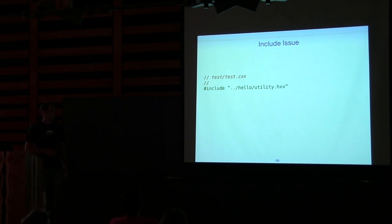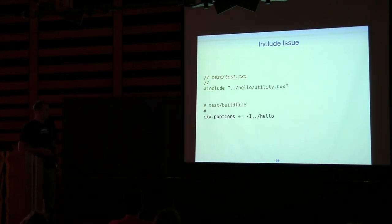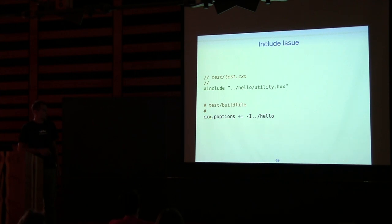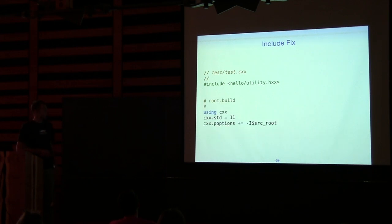How do we fix it? One way is to add the dash-I option. We add it to the preprocessor options — 'cxx.poptions' stands for preprocessor options; there's also 'coptions' and 'loptions.' I prefer to use bracket includes everywhere with the directory prefix, and add the dash-I option in the root build file so I don't have to repeat it everywhere. Let's check if it actually helps — building from test now works.